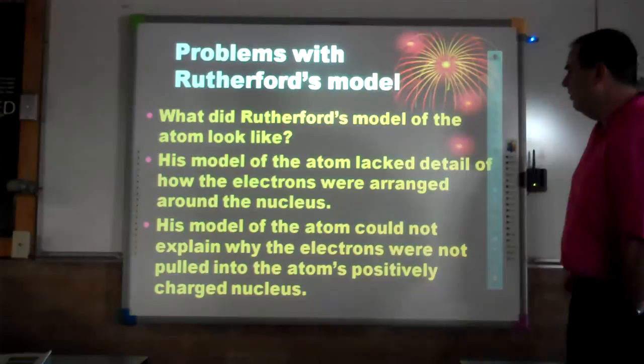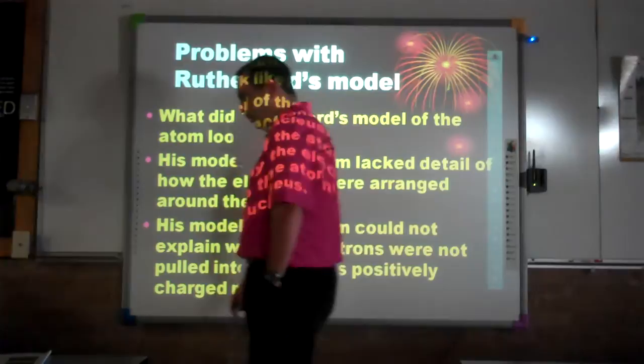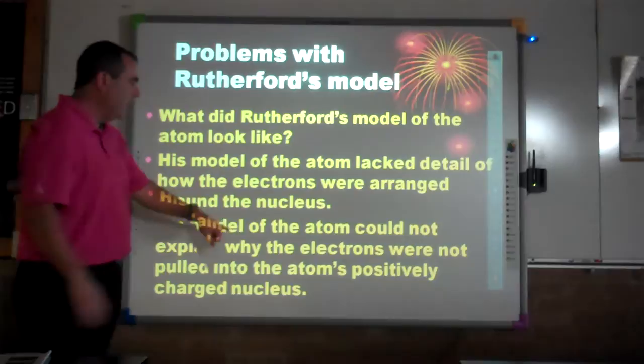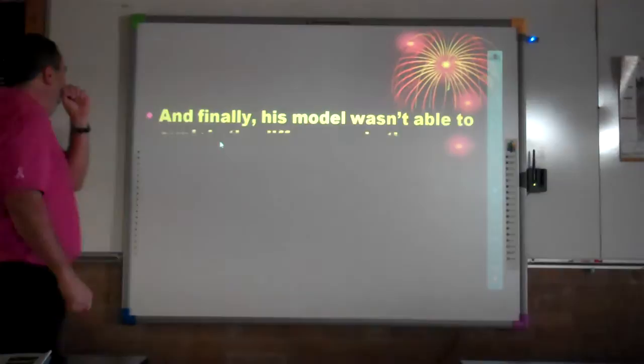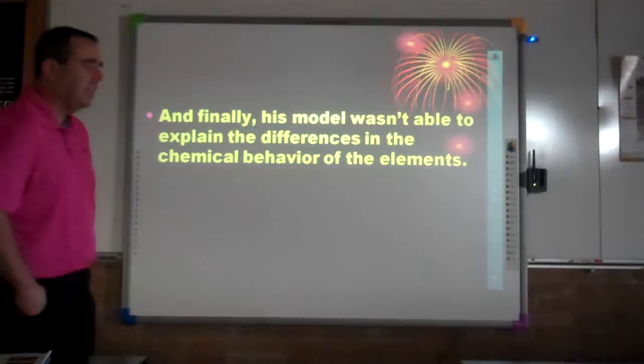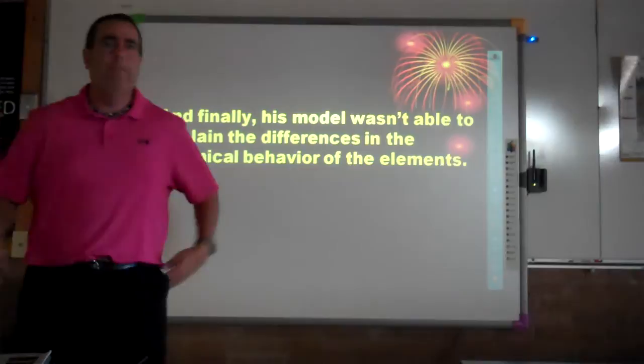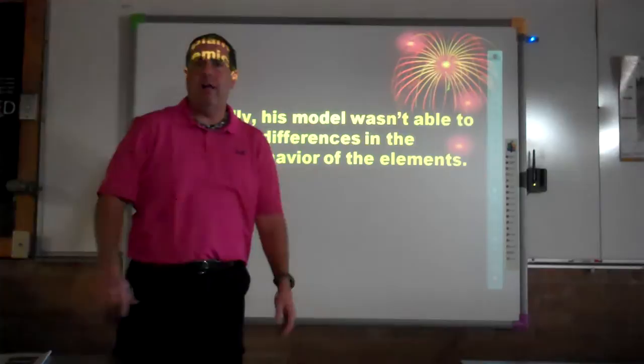His model also could not explain why the electrons were not pulled into the atom's positively charged nucleus. We know positives and negatives attract one another, but he couldn't explain what would cause that atom to implode if they literally attracted. Finally, his model couldn't explain the differences in the chemical behavior of elements. What made hydrogen different than oxygen? What made both of those gases different from calcium, a soft silvery metal?